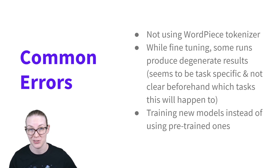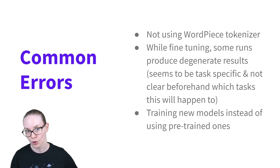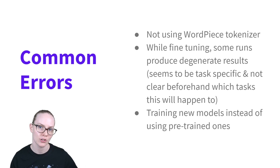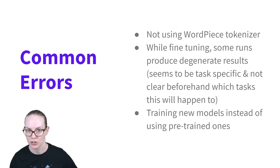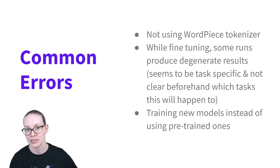There are also a lot of mistakes you can make while using BERT. Probably the most common is not using the word piece tokenizer — you need to use exactly the same tokenizer for your work that was used to train the original model. In addition, it's not entirely clear why, but while fine-tuning, some runs of the model will be degenerate and won't converge. This seems to be dependent on the task and the random seed used to initialize the model. It's hard to predict when that'll happen, so it's good to be very aggressive with early stopping if you're doing fine-tuning yourself.